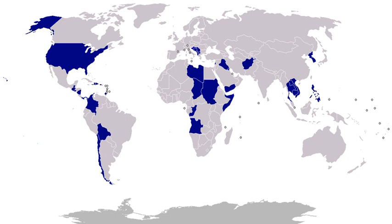1988, Persian Gulf, Operation Praying Mantis: the April 18, 1988 action waged by U.S. naval forces in retaliation for the Iranian mining of the Persian Gulf and the subsequent damage to an American warship. 1988, Honduras, Operation Golden Pheasant: an emergency deployment of U.S. troops to Honduras in 1988, as a result of threatening actions by the forces of the then-socialist Nicaraguans. 1988, USS Vincennes shoot-down of Iran Air Flight 655. 1988, Panama: in mid-March and April 1988, during a period of instability in Panama and as the United States increased pressure on Panamanian head of State General Manuel Noriega to resign, the United States sent 1,000 troops to Panama to 'further safeguard the canal, U.S. lives, property, and interests in the area.' The forces supplemented 10,000 U.S. military personnel already in the Panama Canal Zone.